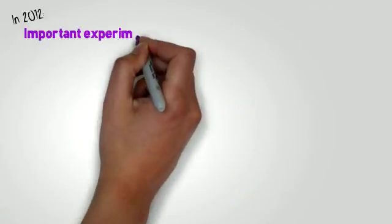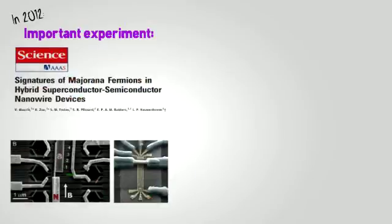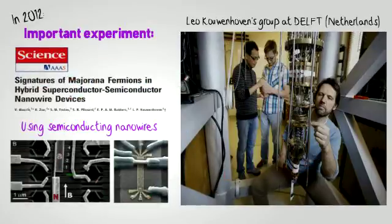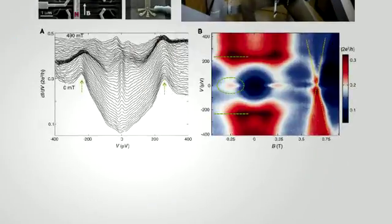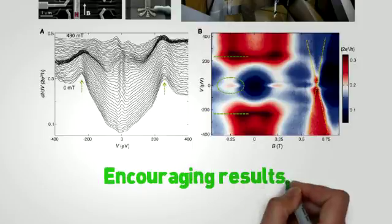Using these ideas, an important experiment took place in 2012 using precisely semiconducting nanowires. Leo Kouwenhoven and his group at Delft in the Netherlands managed to measure the transport properties of electrons passing through a proximized semiconducting nanowire in a strong magnetic field. According to theory, at both ends of the nanowire and under certain conditions, two Majorana bound states should appear. The presence of these states should modify the measured current in a specific way, and this was verified and analyzed in detail in their experiment. The results were truly encouraging.